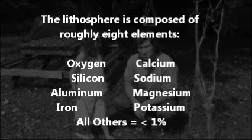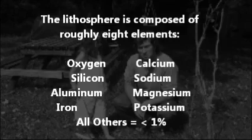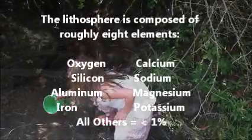The lithosphere is composed of roughly eight elements. They are oxygen, silicon, aluminum, iron, calcium, sodium, magnesium, and potassium. There are other elements in the lithosphere, but they make up less than 1%.